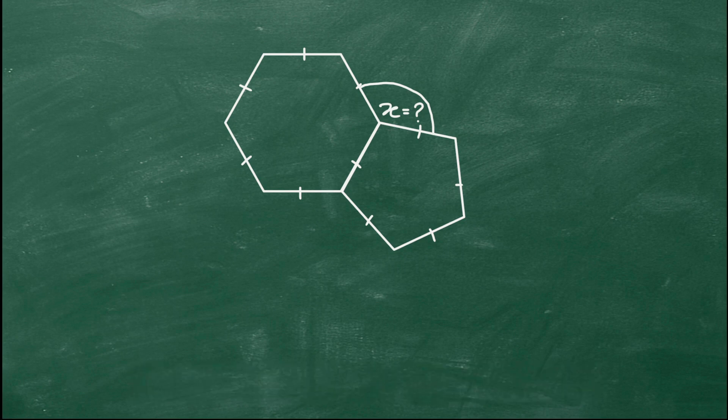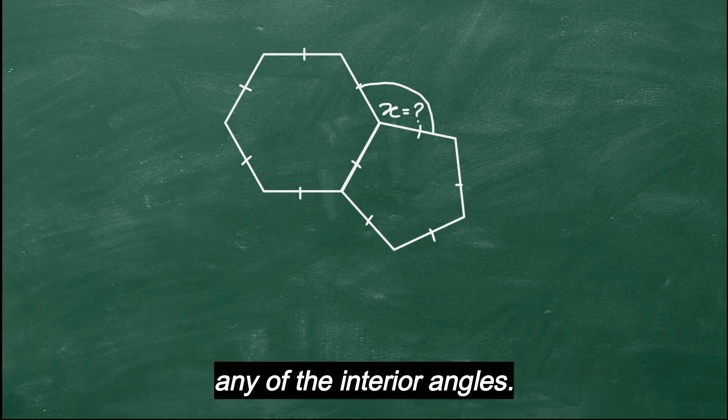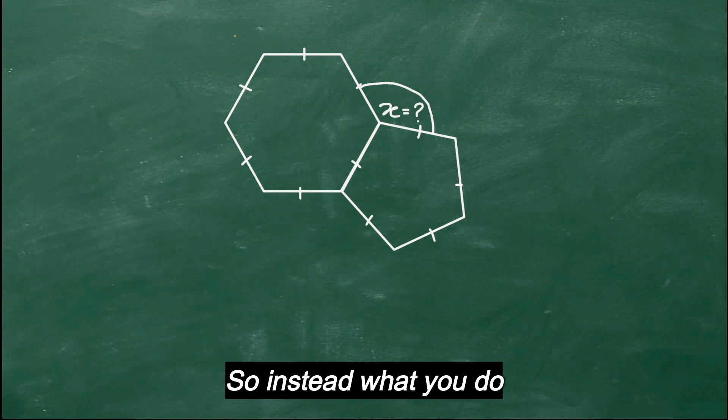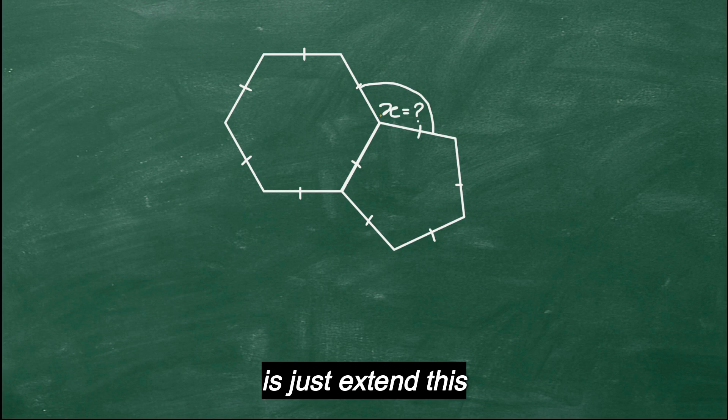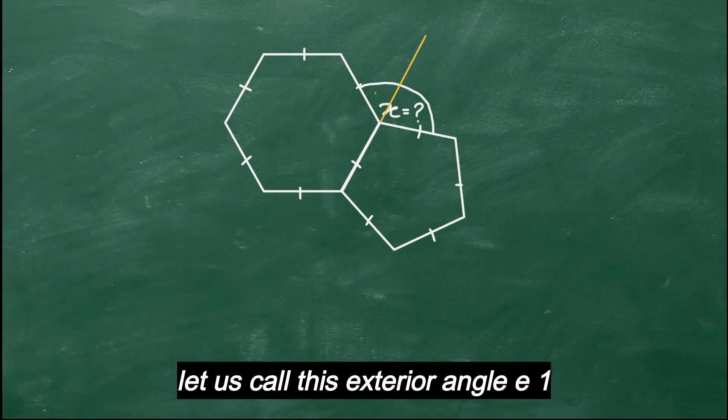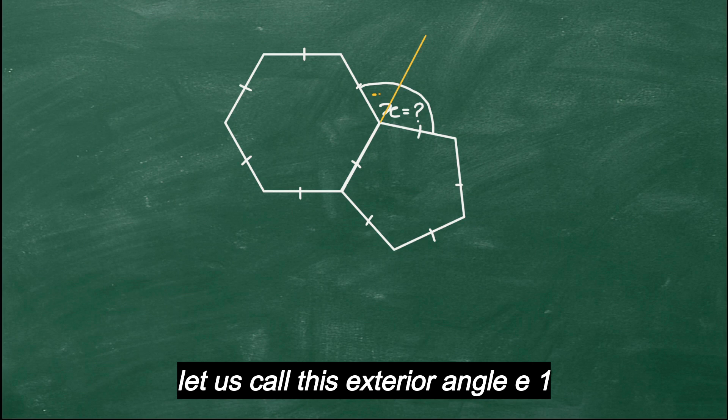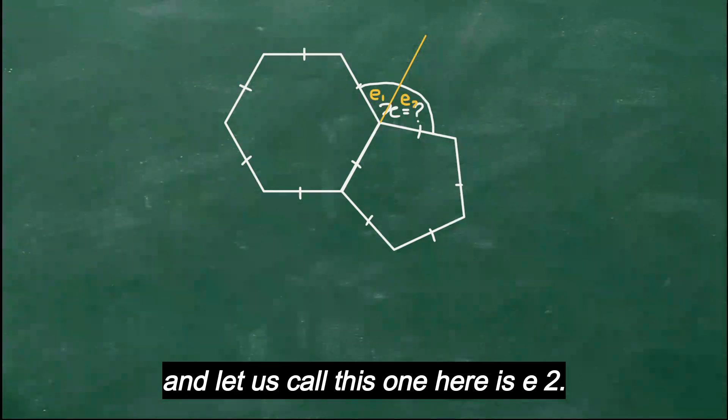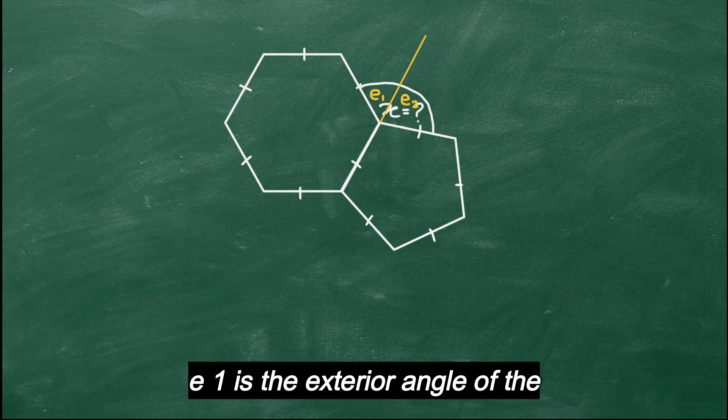Now for this method, you do not need to find any of the interior angles. So instead, what you do is just extend this common side here. Let's call this exterior angle e1, and let's call this one here e2. e1 is the exterior angle of the regular hexagon.